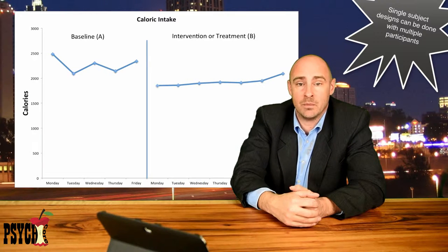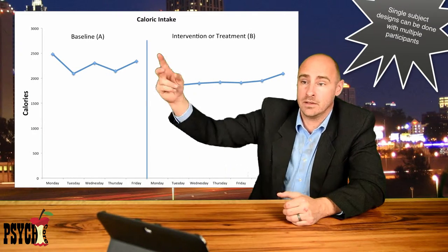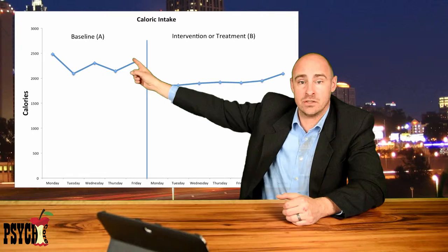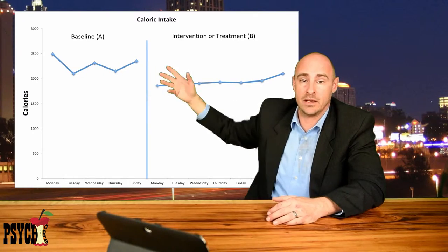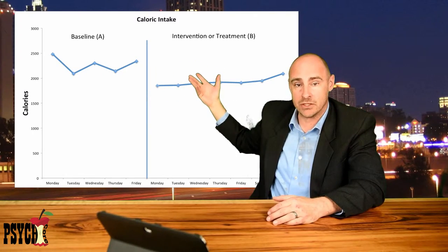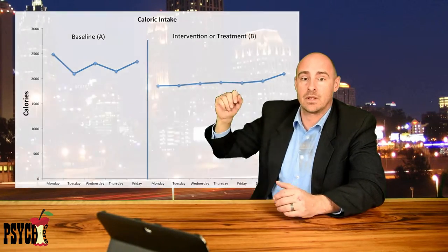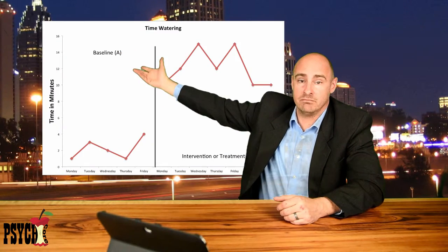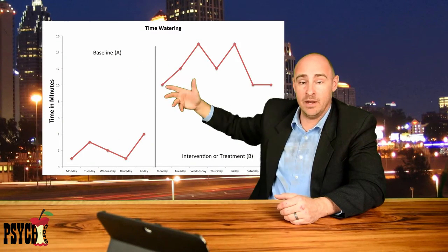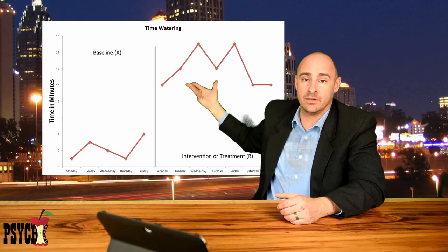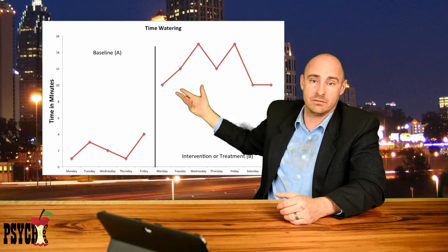An example would be your existing diet that you're on as an A condition, followed by the new diet that you're trying as a B condition. You could also not water your lawn for a period of time as an A condition, followed by watering your lawn as a B condition.